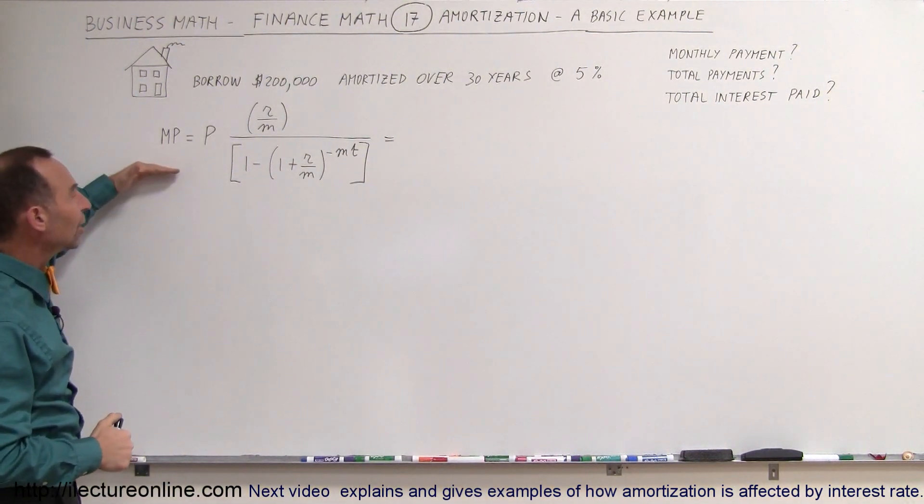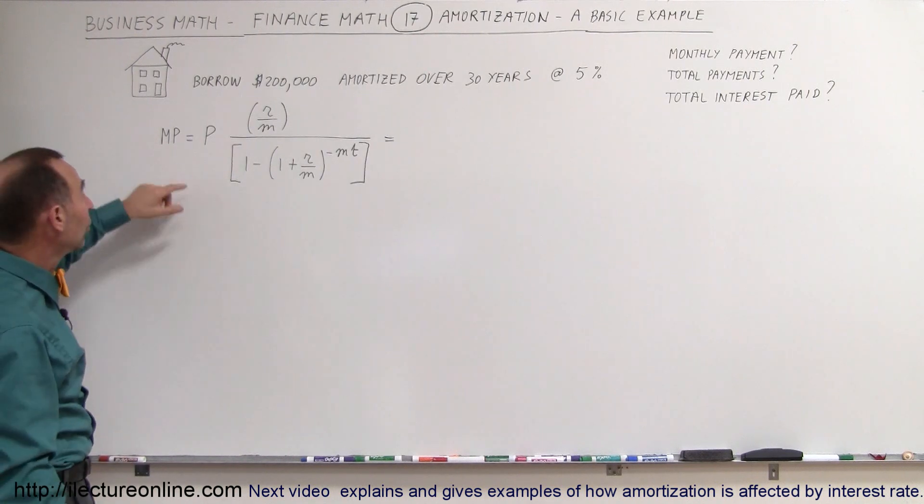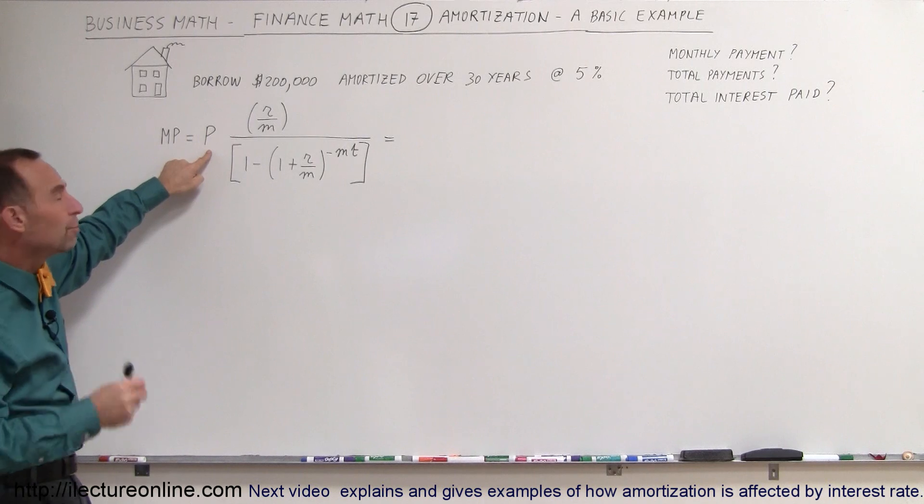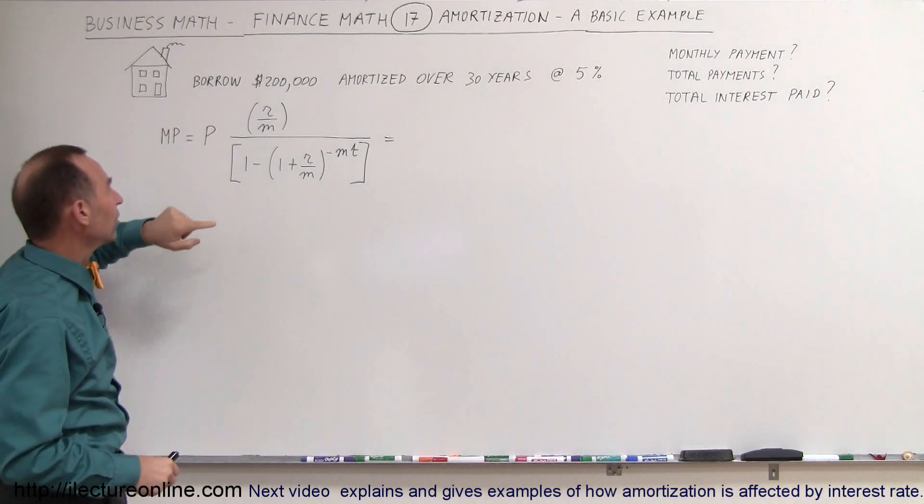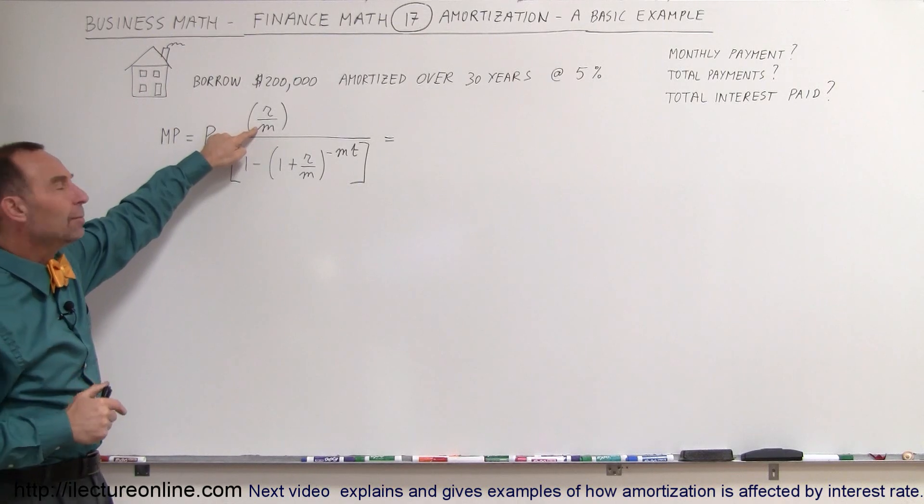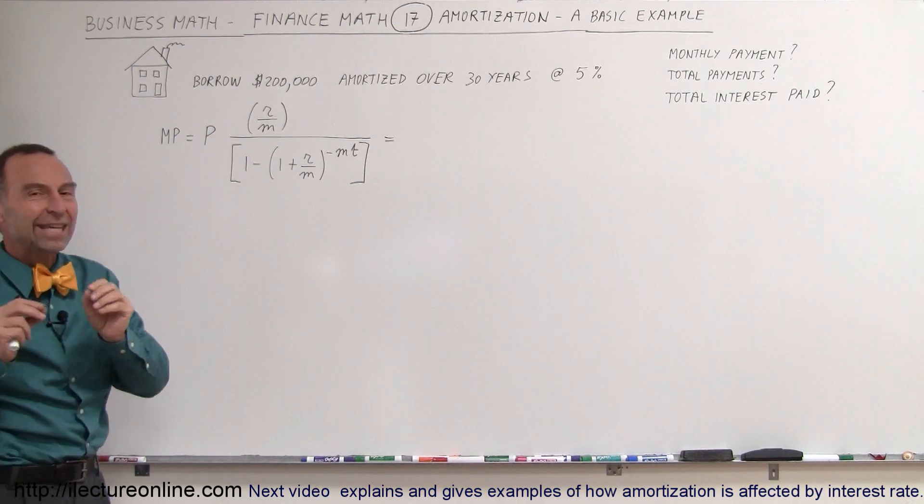So here's the equation that we need to calculate that. So the monthly payment, MP equals the principal, the amount of money that you borrow from the bank, that would be $200,000, times the rate divided by the number of monthly payments. So M will be 12, or I should say yearly payments.